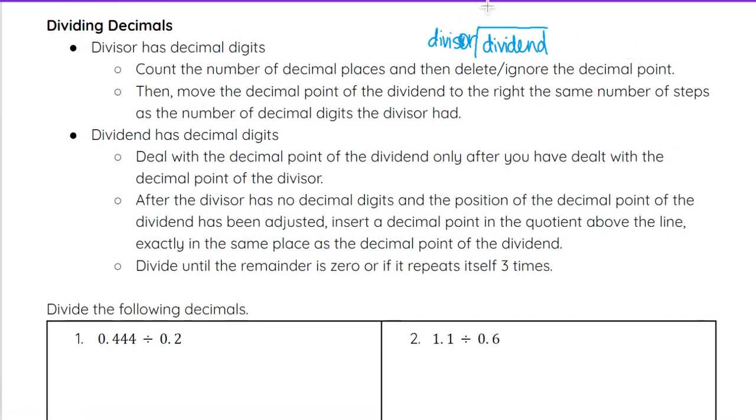And then what we end up with as our answer is going to be our quotient. Now sometimes that's written as a fraction, so the dividend would be on top and the divisor would be on the bottom. And again, what we get, our quotient, is going to be our answer. So that's two ways we can look at a dividend, a divisor, and a quotient.